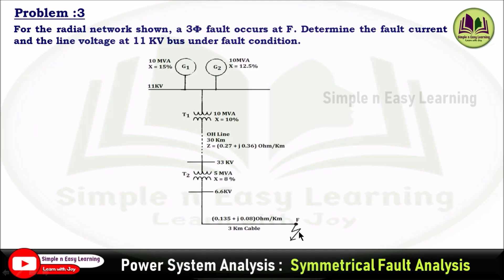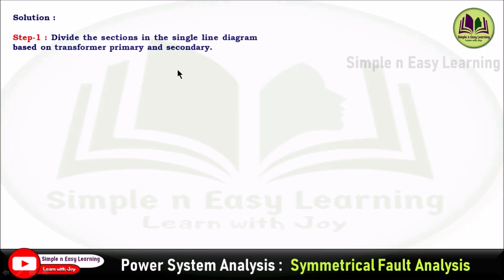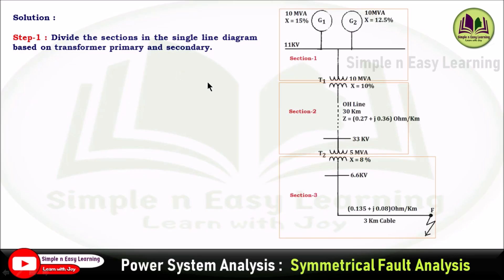At the end of the third kilometer is fault point F, where the fault occurs. We need to determine the fault current and the line voltage at the 11 kV bus under fault condition. Step 1: divide the single line diagram into sections based on transformer primary and secondary. Section 1 is the transformer T1 primary side; section 2 is the T1 secondary and T2 high-voltage side; section 3 is the T2 LT side.